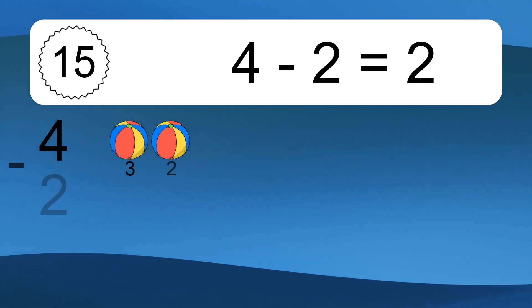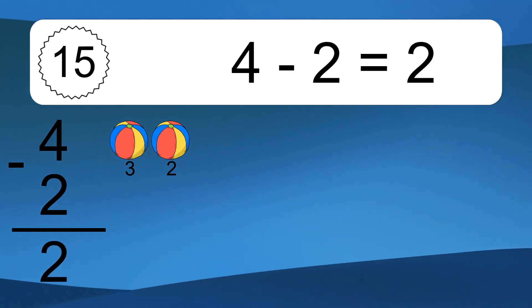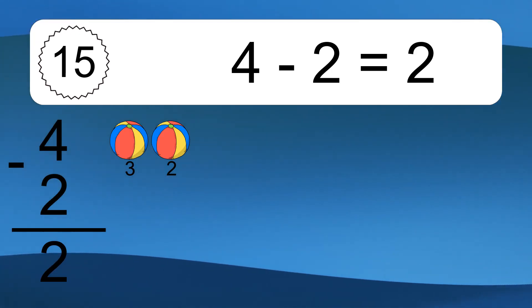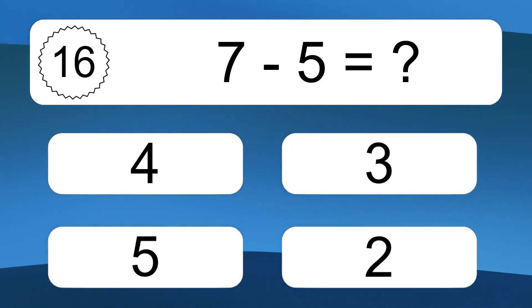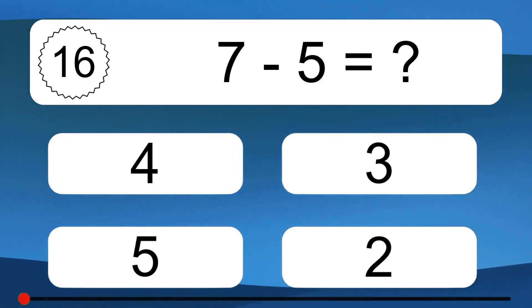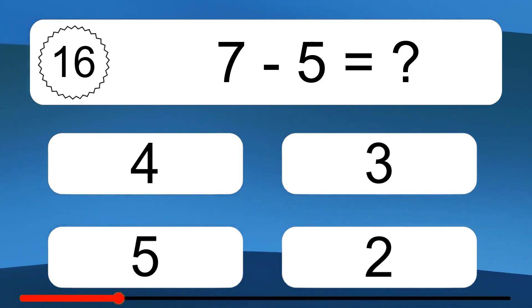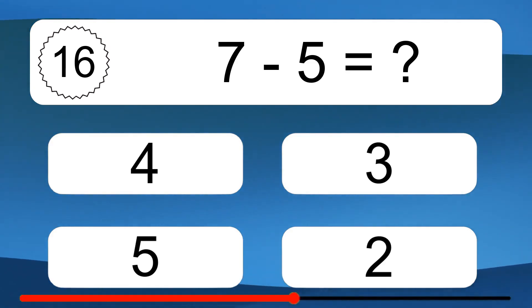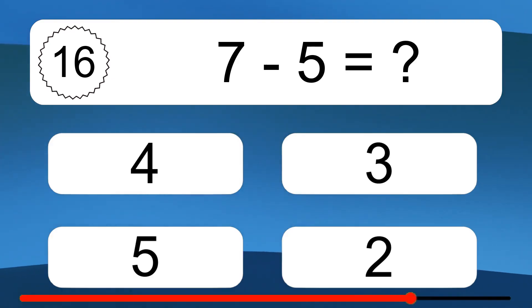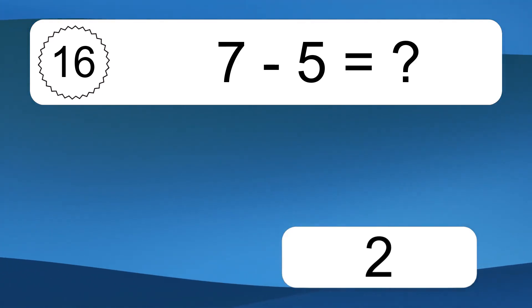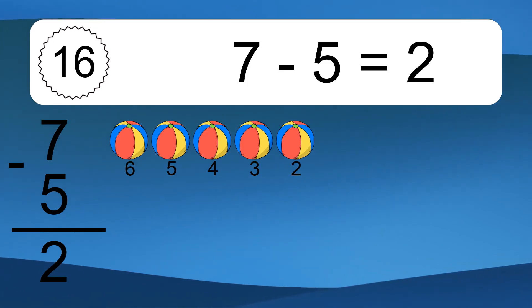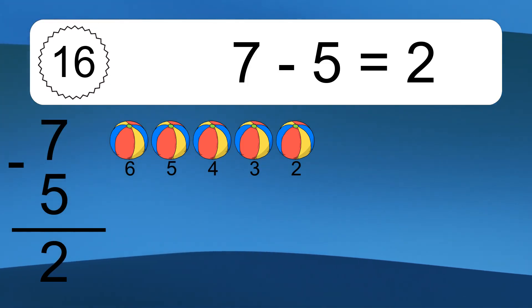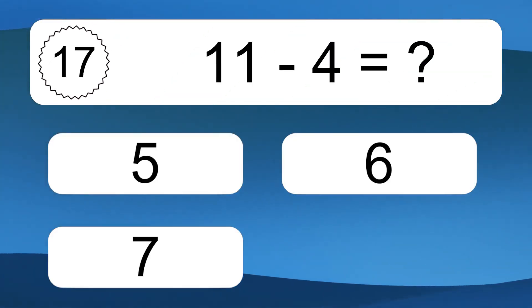4 minus 2 equals what? 4 minus 2 equals 2. Let's count it: 3, 2. 7 minus 5 equals what? 7 minus 5 equals 2. Let's count it: 6, 5, 4, 3, 2.